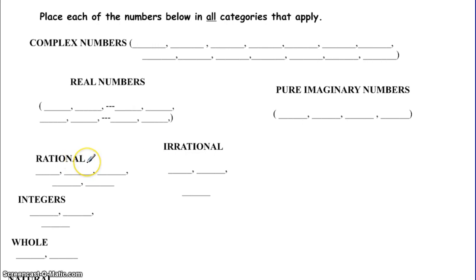Rational numbers are numbers that can be put into a fraction — a quotient of two integers. We can also think of it as a decimal that is repeating, like two-thirds, or a decimal that terminates, like one-half, which gives you 0.5 in the calculator. That would be a rational number.